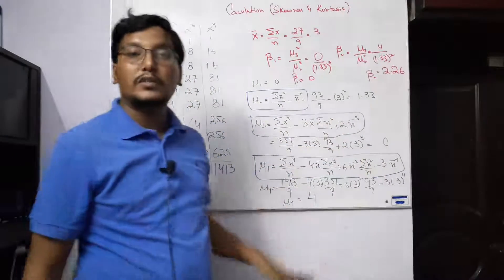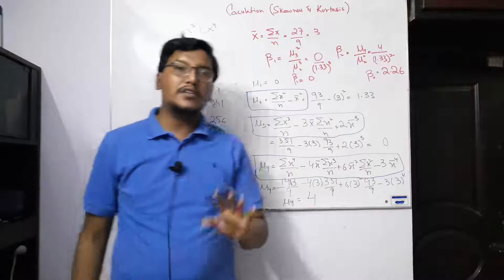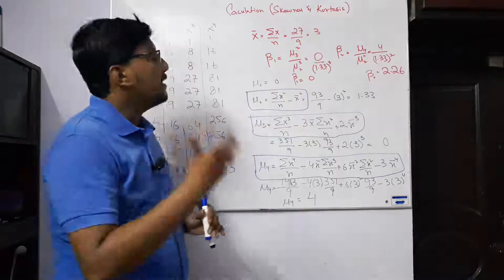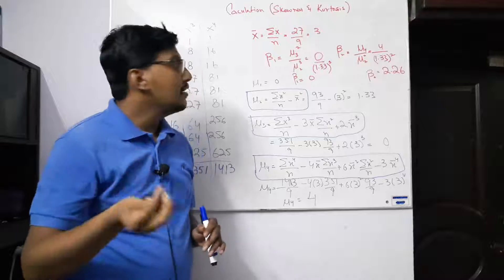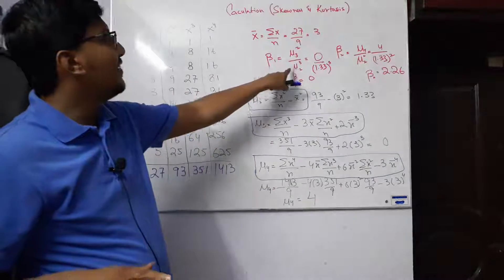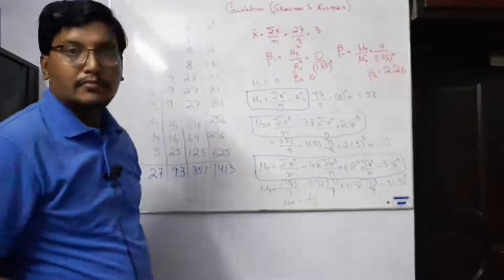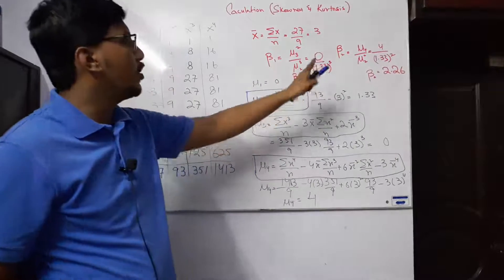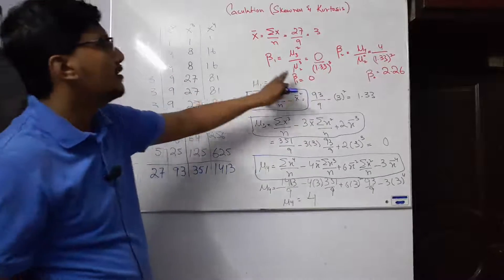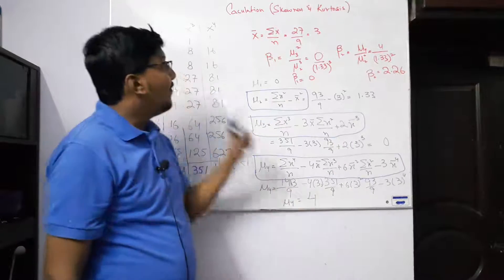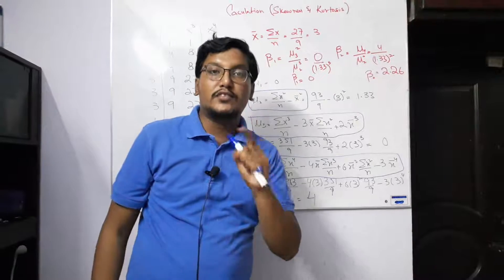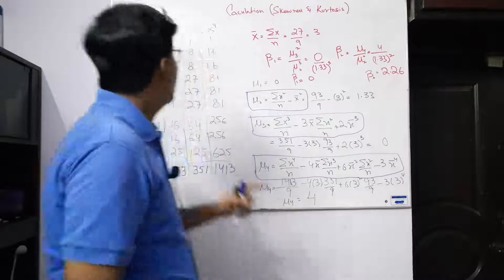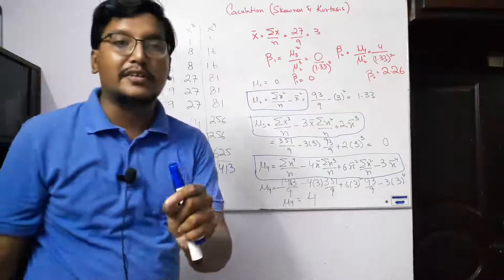Now we calculate beta 1. The formula for beta 1 is the square of the third moment divided by the cube of the second moment. The third moment is 0, so the numerator is 0. Even though the second moment is 1.33 cubed, dividing by zero gives us beta 1 equal to 0. When beta 1 equals 0, skewness is zero, which shows there is perfect symmetry in this data.